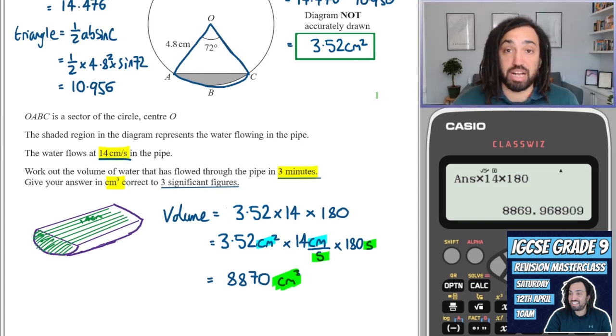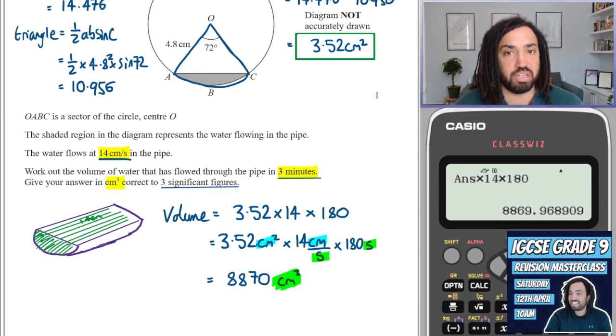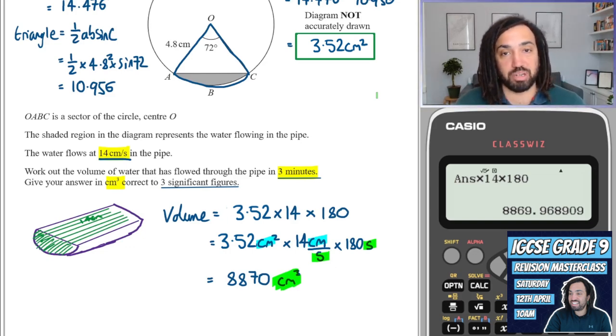And that's it, that's a wrap. So I thought that was quite a tricky question, because I've never seen a question where you have to consider the flow of water in the units of centimetres per second. So I thought it was an interesting one to do. I hope you enjoyed that. Check out my live revision session, link in the description, and I will see you in the next one. Bye for now.